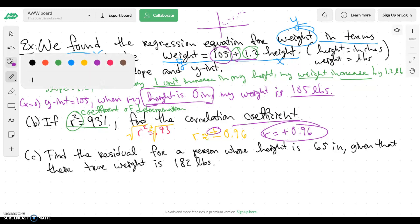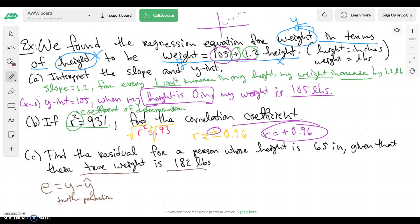Okay, so now here, what we want to find, we want to find the residual for a person whose height is 65 inches and I know that their true weight is 182 pounds. Okay, so if you remember the residual, my residual was equal to Y minus Y hat, which is basically the truth minus the prediction of Y. Now think about what Y is. Y is my weight. So that means I'm taking the true weight minus a predicted weight.